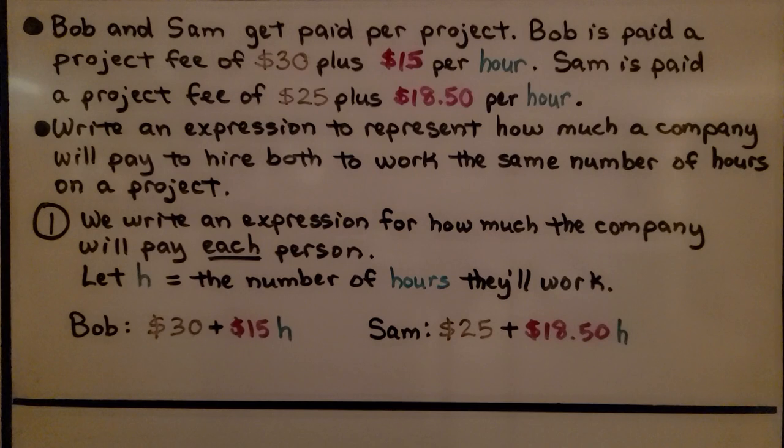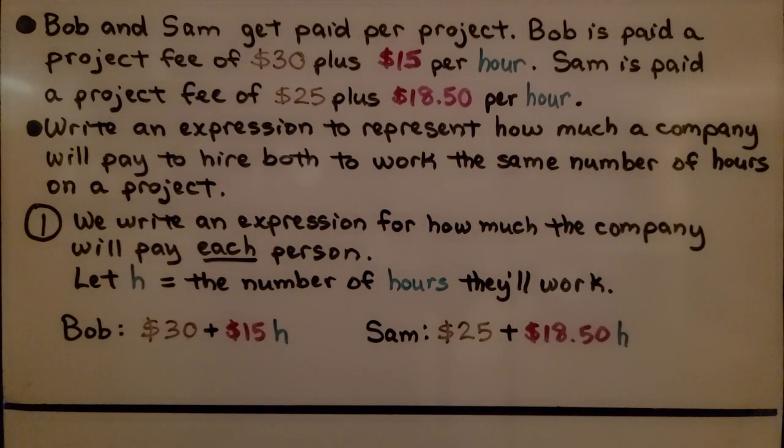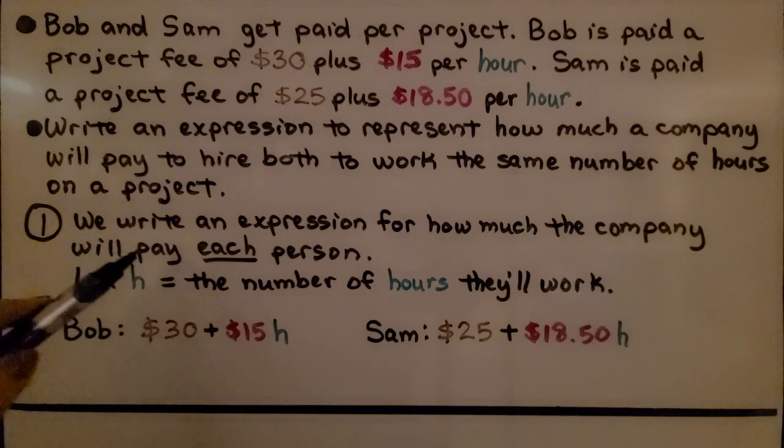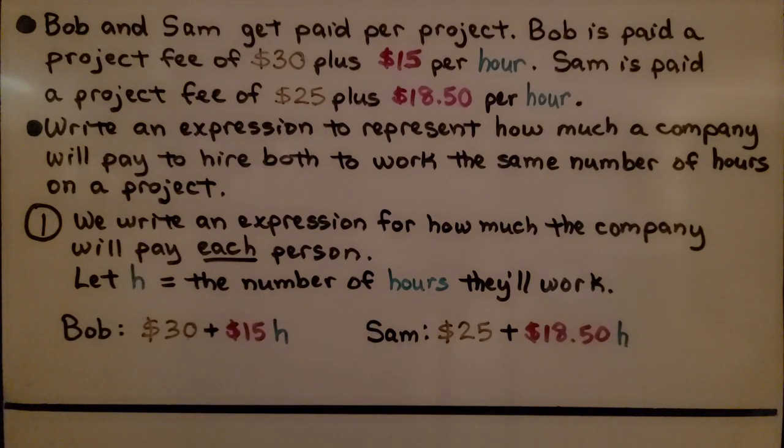Bob and Sam get paid per project. Bob is paid a project fee of $30 plus $15 per hour. Sam is paid a project fee of $25 plus $18.50 per hour. Write an expression to represent how much a company will pay to hire both to work the same number of hours on a project. So the first thing we do is write an expression for how much the company will pay each person. We're going to let h equal the number of hours they'll work. That's going to be our variable.